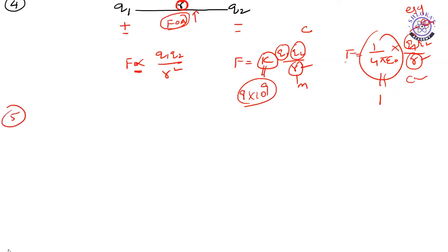And fifth point. If I take potential energy of a system having two charges again, Q1 Q2 separated by a distance of R, then the potential energy is given by 1 by 4 pi epsilon naught Q1 Q2 by R, not R square. So this is fifth property.